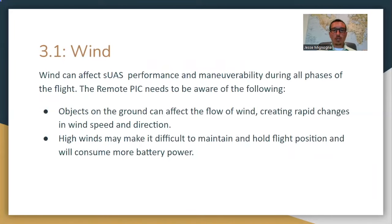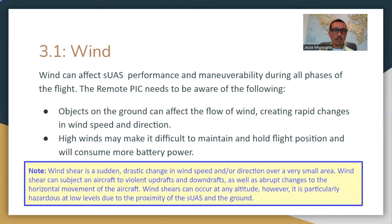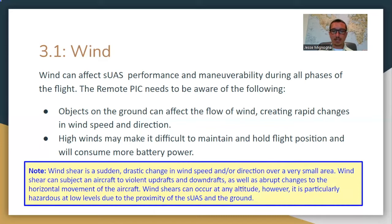Wind can affect UAS performance and maneuverability during all phases of flight. Objects on the ground can affect the flow of wind, creating rapid changes in wind speed and direction. High winds make it difficult to maintain flight position and will consume more battery. Note: wind shear is a sudden drastic change in wind speed and/or direction over a very small area. Wind shear can subject an aircraft to violent updrafts and downdrafts, as well as abrupt changes in horizontal movement. Wind shear can occur at any altitude.